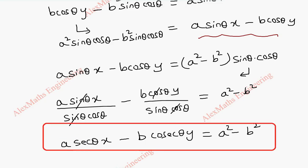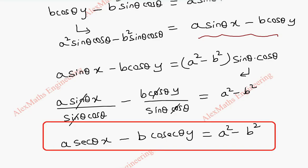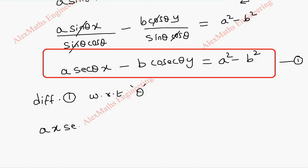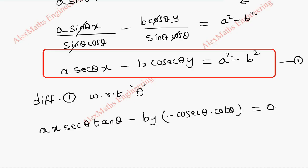We have to differentiate this with respect to theta and eliminate theta to get the evolute as the envelope of the normal. Differentiating equation 1 with respect to theta, treating x and y as constants: ax secant theta differentiation is secant theta tan theta, minus by, and cos theta differentiation is negative cosec theta cot theta. On the other side everything is a constant, so it is 0.